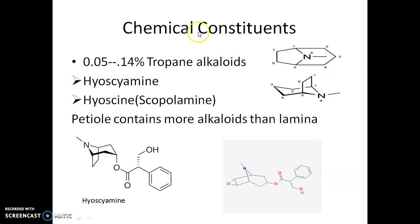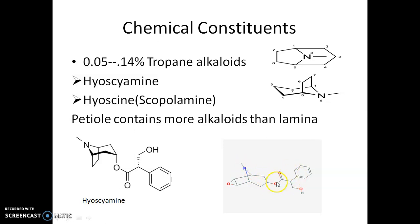The tropane alkaloid is produced by the fusion of the pyrrolidine ring with a common methylated nitrogen. Mostly it consists of two important tropane alkaloids: one is hyoscyamine — on the left side you can see the structure of hyoscyamine — and the second one is hyoscine, also known as scopolamine.